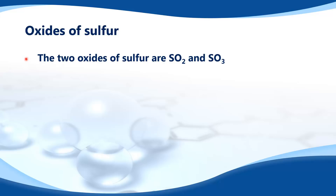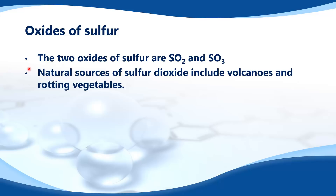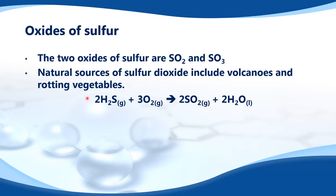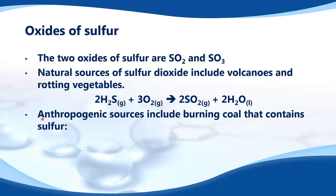Oxides of sulfur: the two oxides of sulfur are SO2, sulfur dioxide, and SO3, sulfur trioxide. Natural sources of sulfur dioxide include volcanoes and rotting vegetables. Sulfur dioxide can also be produced from the oxidation of hydrogen sulfide gas. Anthropogenic sources of sulfur oxides include burning coal that contains sulfur: sulfur plus oxygen gives sulfur dioxide.